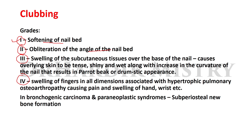In Grade 3 clubbing, there is swelling of the subcutaneous tissue over the base of the nail, causing the overlying skin to become tense, shiny, and wet, along with an increase in the curvature of the nail. This results in a parrot-beak or drumstick appearance.